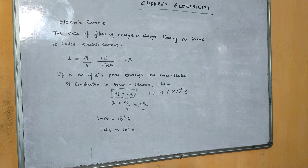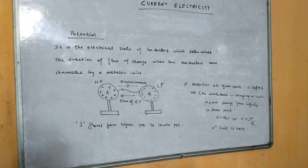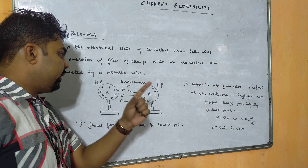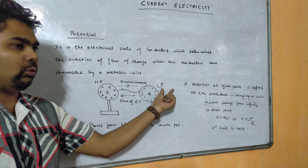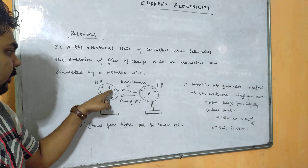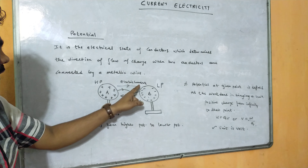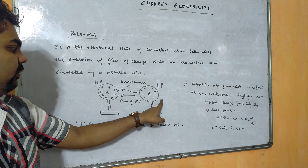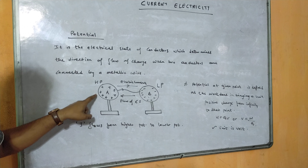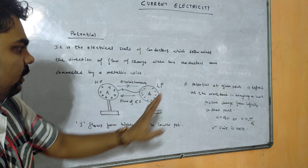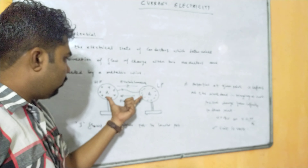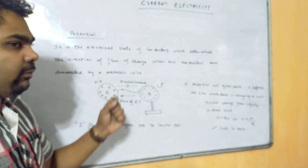These notes which I have written on the board you need to write in your exercise book. The potential of a conductor is the electrical state which determines the direction of flow of charge when two conductors are connected by a metallic wire — provided one is at higher potential and the other at lower potential. The direction of electric current is opposite to the flow of electrons. Here there is a deficit of electrons, and there it is an excess of electrons.